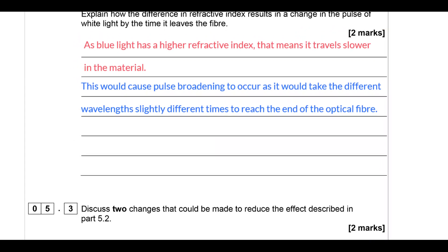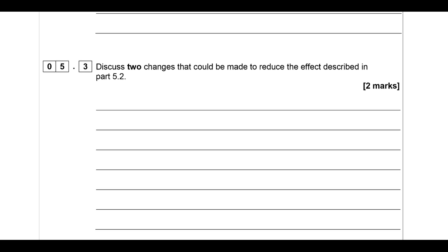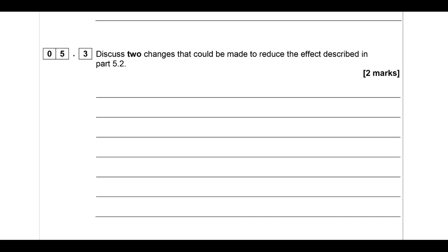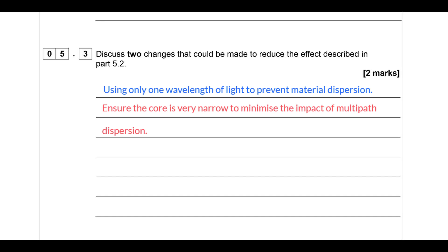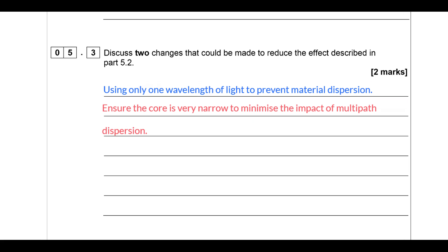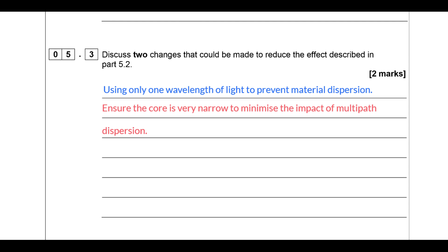Discuss two changes that can be made to reduce the pulse broadening effect. First, we could use a monochromatic source of light - instead of white light, using just red for example - which eliminates material dispersion entirely. Second, you could fix pulse broadening at intervals along the optical fibre using repeaters. You could also make the core narrower so that light can only take one path, avoiding multi-path (modal) dispersion - those two terms are typically interchangeable.